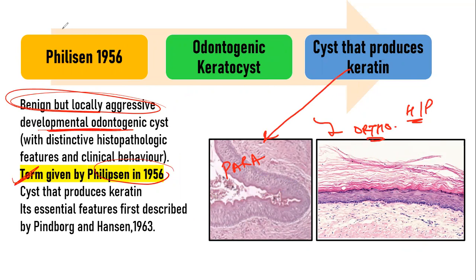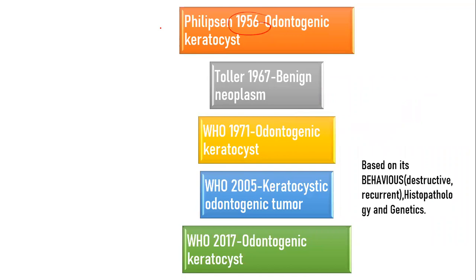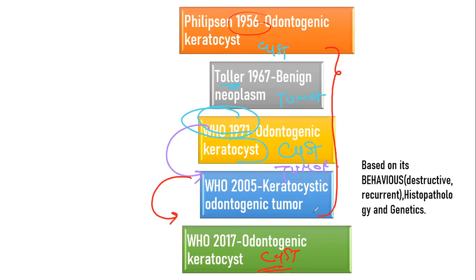Over the years, there have been multiple debates and controversies over whether it is a cyst or a tumor. In 1956, Philipsen called it a cyst. Toller in 1967 called it a tumor. WHO in 1971 classified it as a cyst, and then in 2005 reclassified it as a tumor. In 2017, they again reclassified it as a cyst. So over the years, it has been multiple times classified and reclassified as a cyst or a tumor.